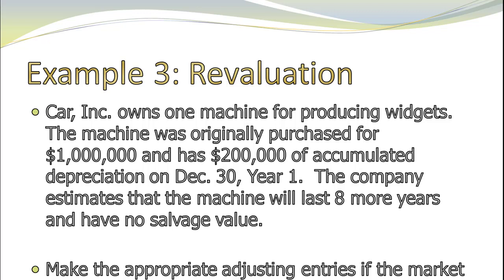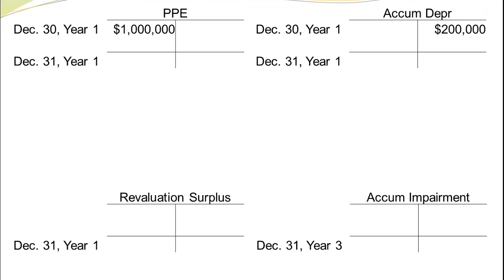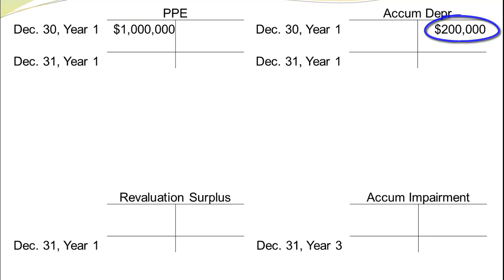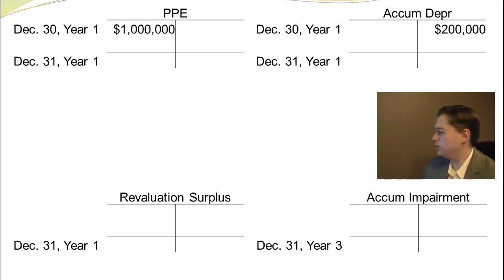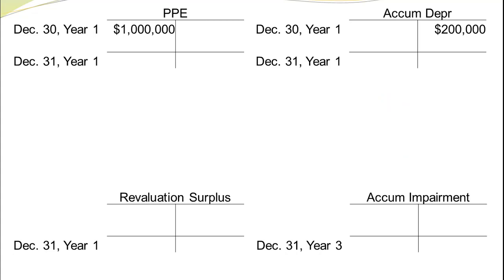But let's assume that Carr has decided to use the fair value method. To use this method, we start with a bunch of T-accounts. We have PP&E of $1,000,000 and accumulated depreciation of $200,000. I've also created the two other accounts necessary from a balance sheet point of view to record PP&E under the revaluation method. You'll want to make accumulated depreciation a bit larger than you see here, as we're going to do quite a bit in that particular account.